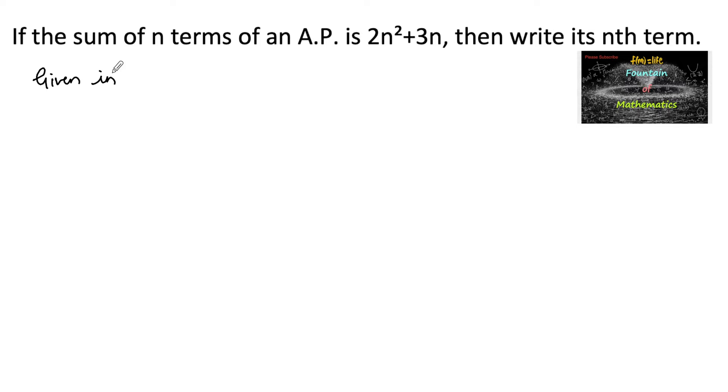Given in an arithmetic progression, the sum of first n terms Sn is equal to 2n square plus 3n. We know that the nth term AN can be obtained by using the sum as Sn minus Sn minus 1.